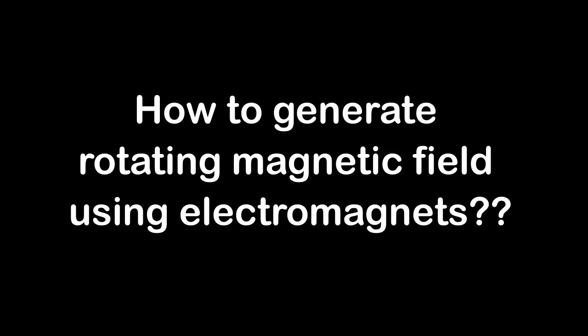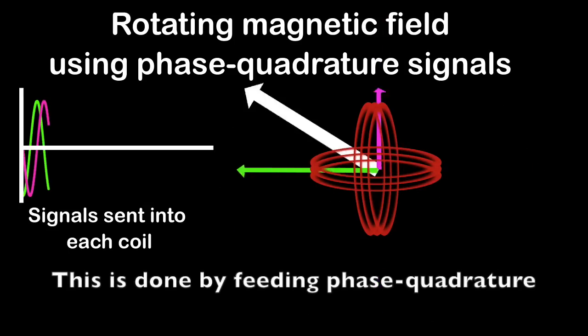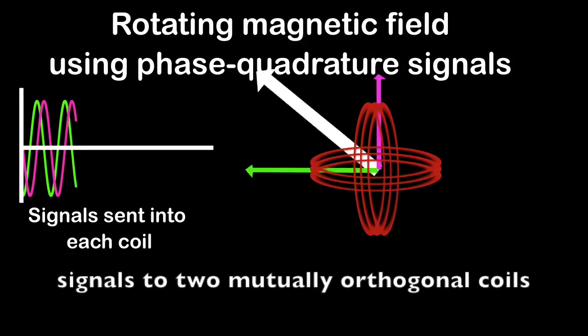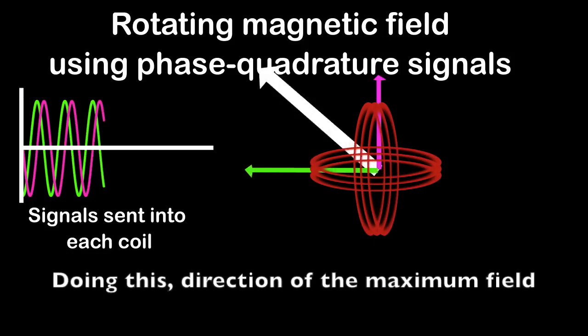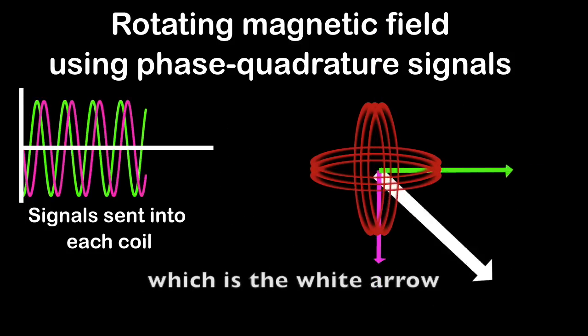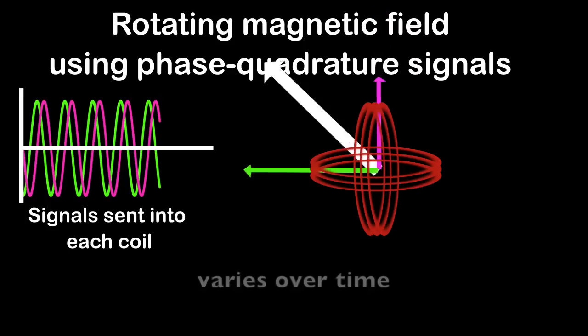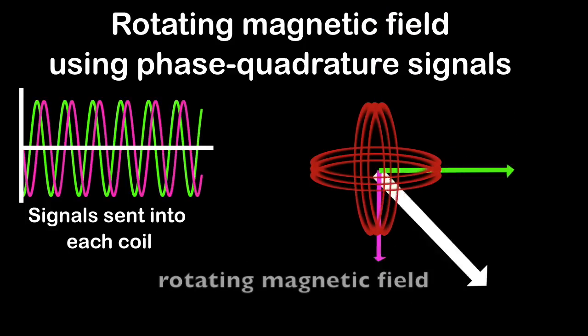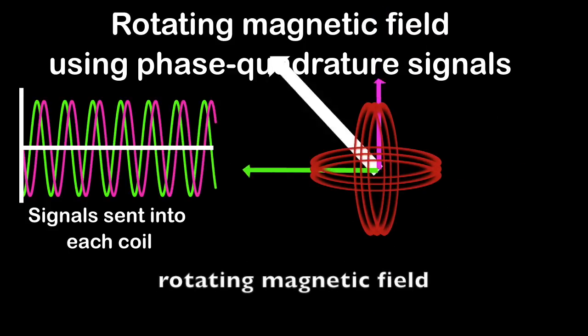Here's another question: how to generate a rotating magnetic field using electromagnets? This is done by feeding phase quadrature signals to two mutually orthogonal coils. Doing this, the direction of the maximum field, which is the white area, varies over time, showing the characteristic of a rotating magnetic field.